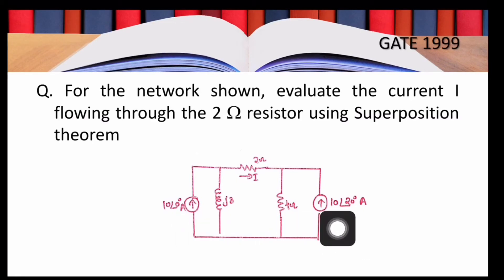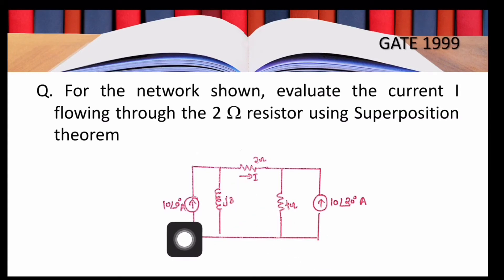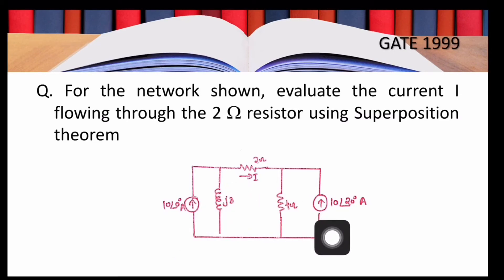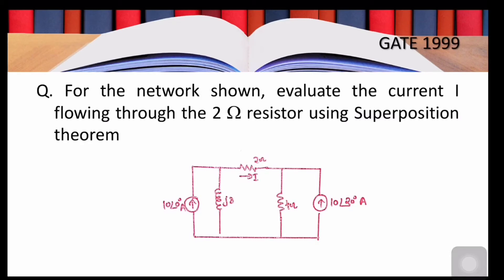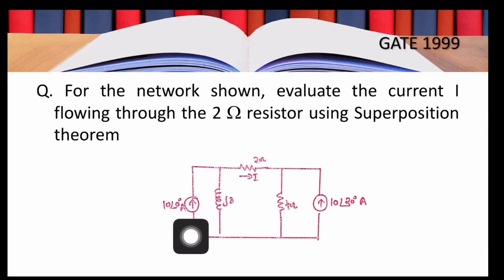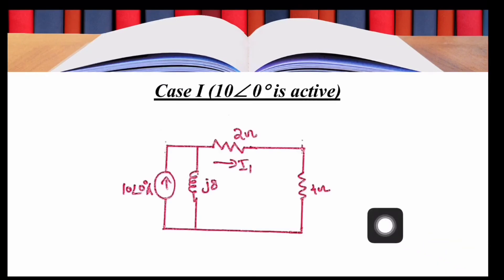We will calculate two quantities: i1 and i2. i1 is the current through the 2-ohm resistor when the 10∠0° source is acting alone, and i2 is the current through the 2-ohm resistor when the 10∠20° source is acting alone. Finally, i = i1 + i2. To find i1, we replace the 10∠20° source with an open circuit. After doing that, i1 is the current through the 2-ohm resistor when 10∠0° is acting alone.